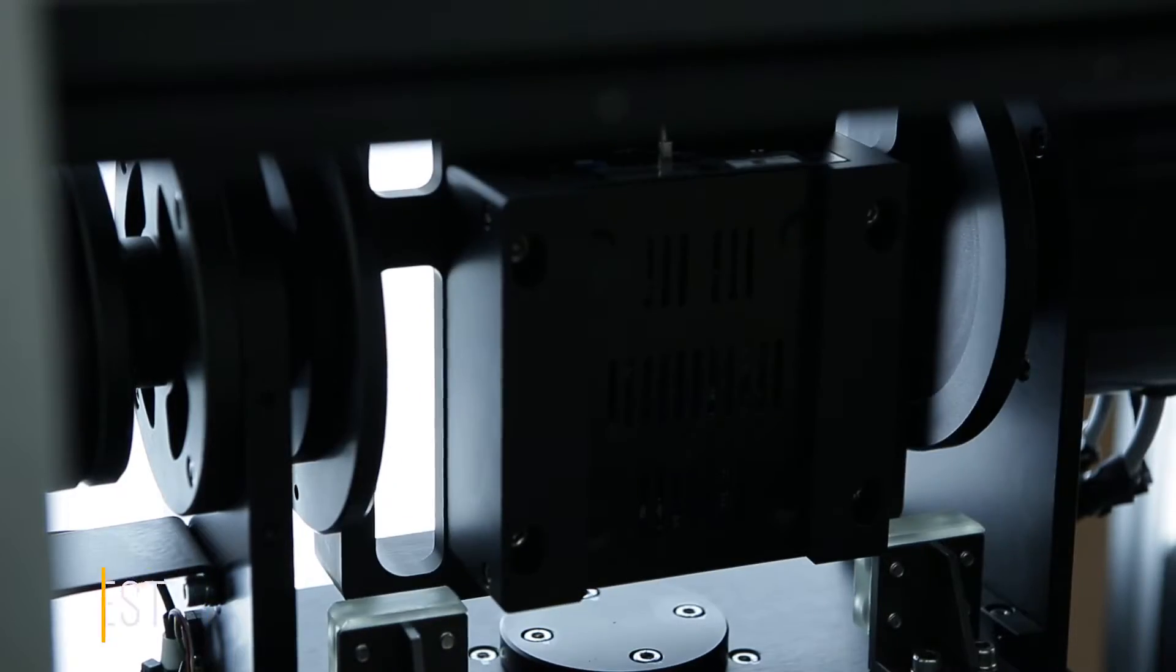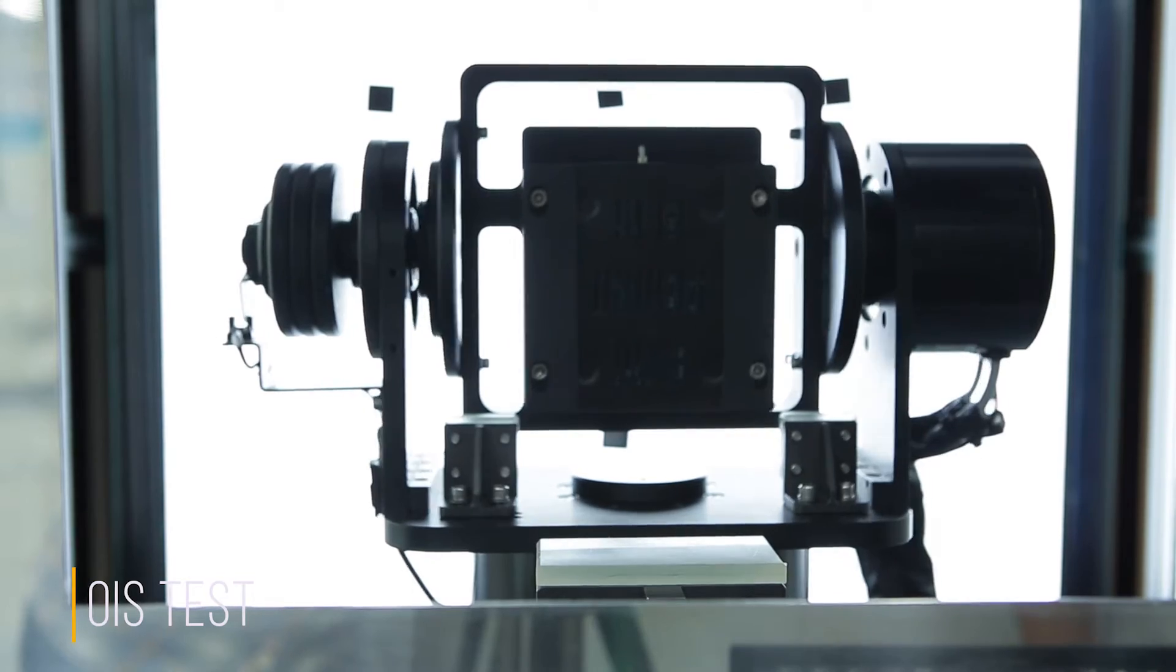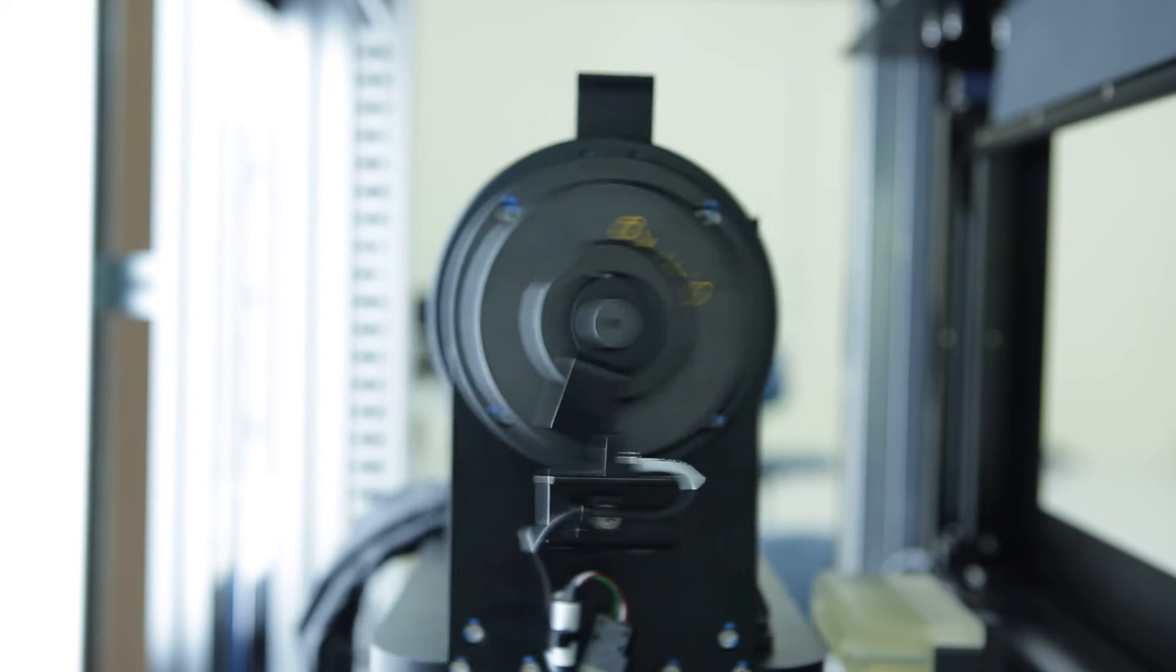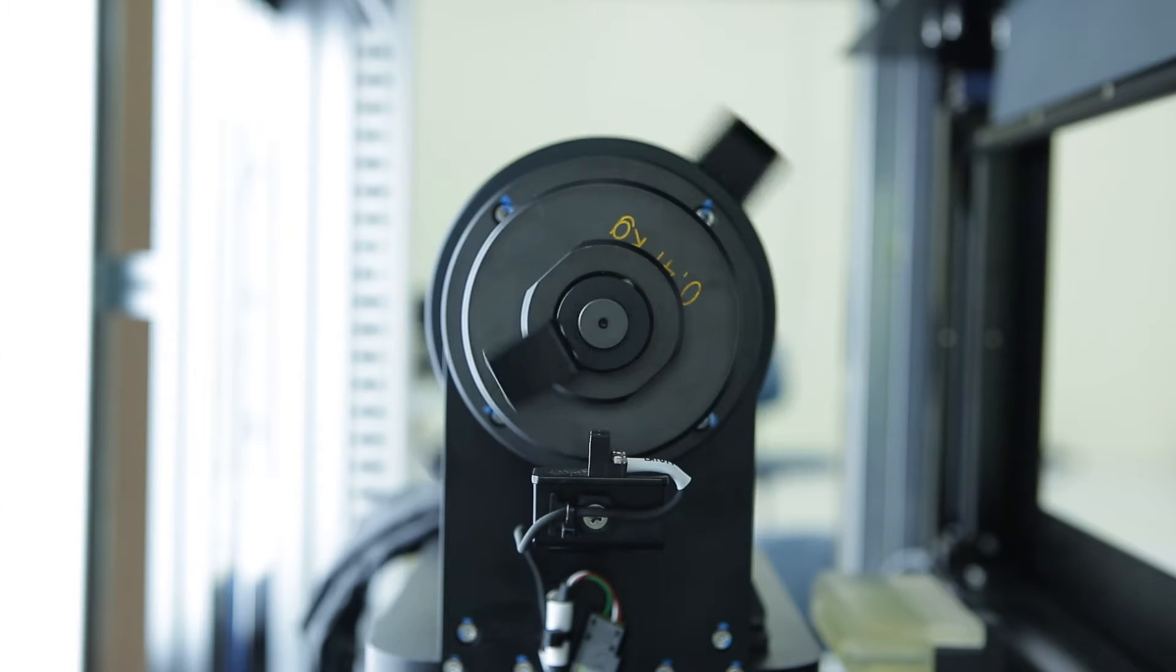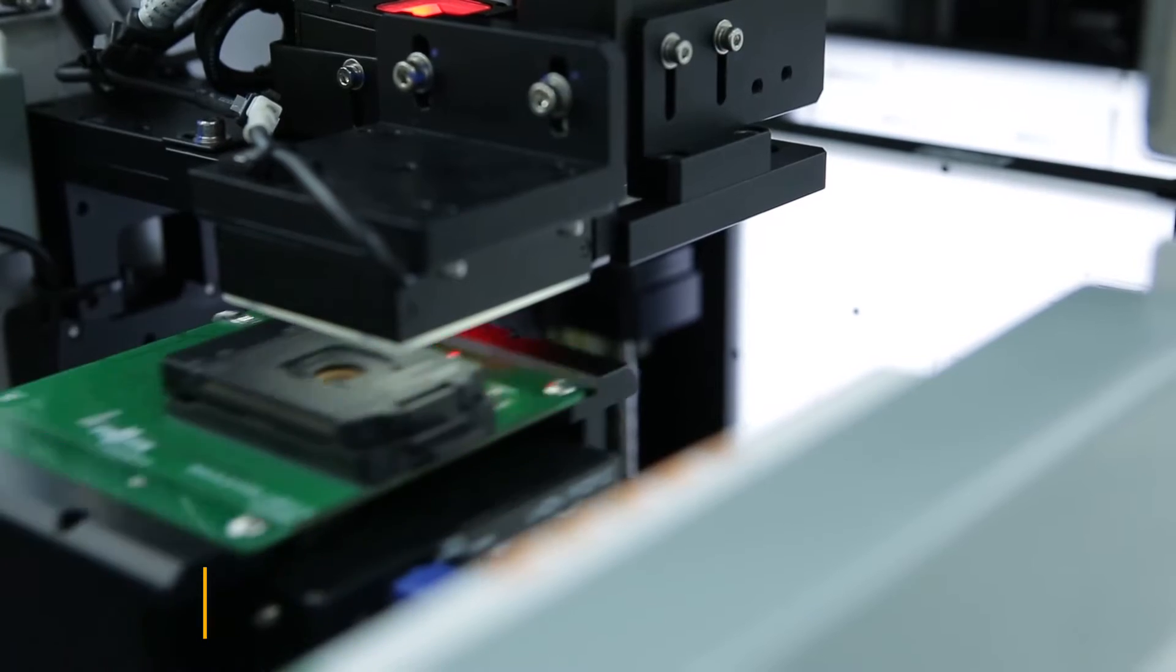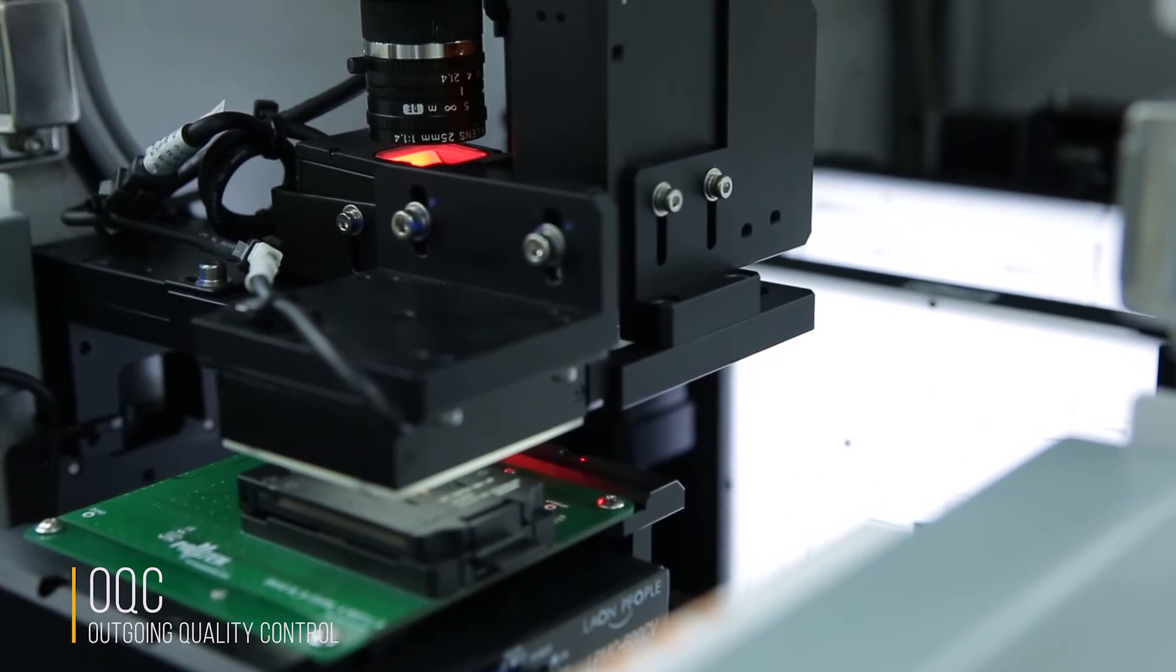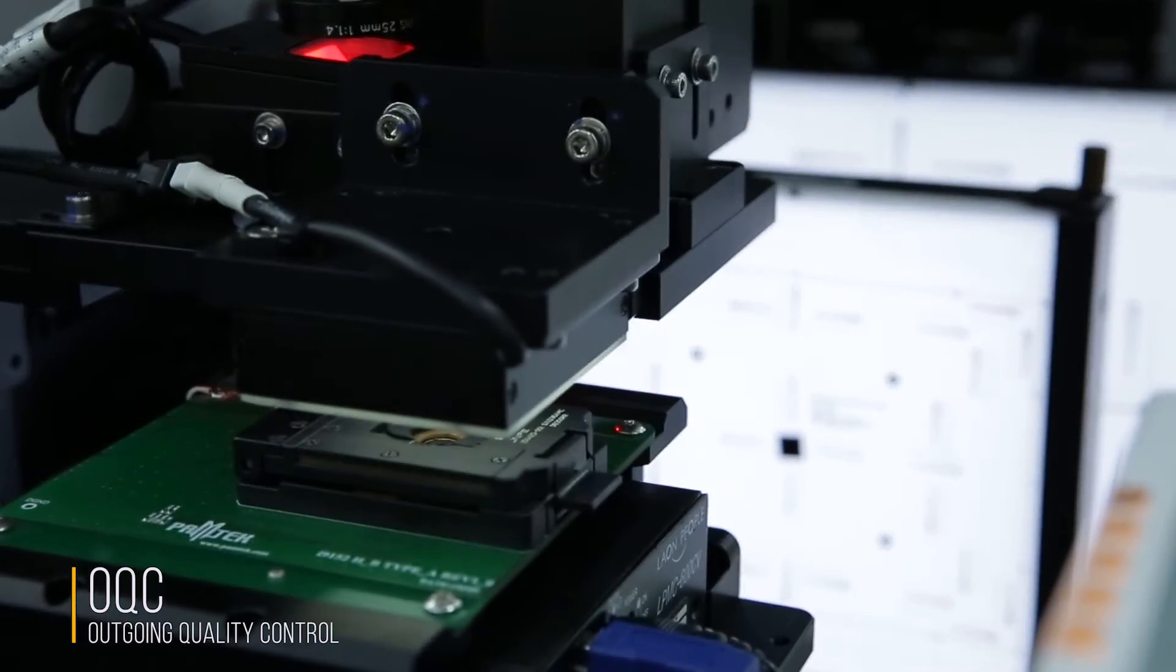For the OIS module with a stabilizer function, the calibration of a hall sensor and a gyro sensor, as well as OIS performance inspection, are additionally performed. The module is released after checking its resolution, image quality and electric characteristics.